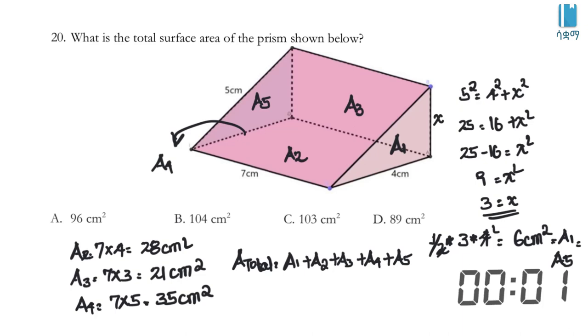Area 1 is the triangle at 6 cm². Area 2 is 28. Area 3 is 35. Area 4 is another rectangle at 21. Area 5 is the other triangle at 6. Adding these: 6 + 28 + 35 + 21 + 6 = 96 cm². The total surface area of the prism is 96 cm², so the answer is A.